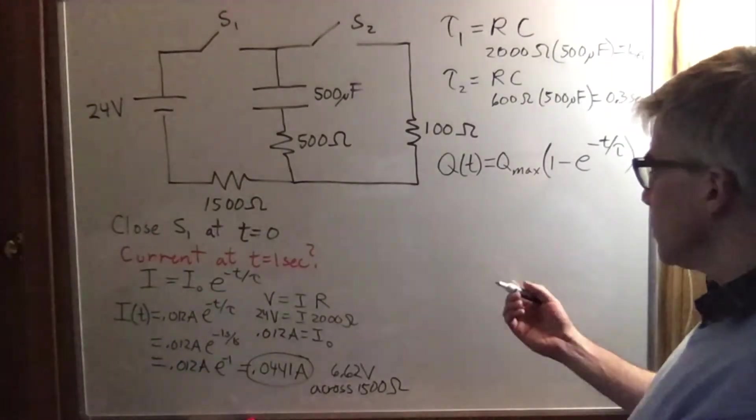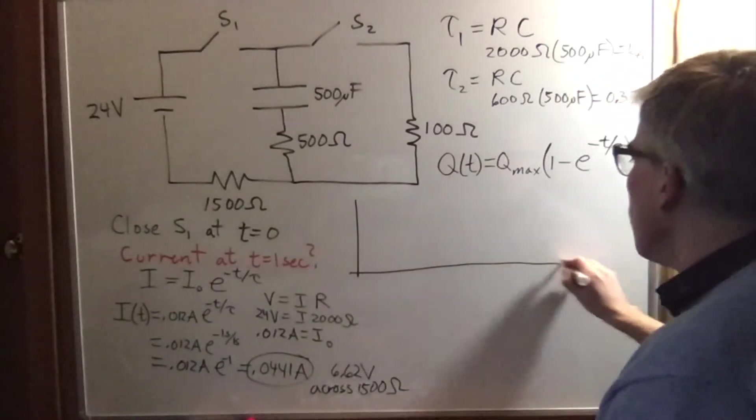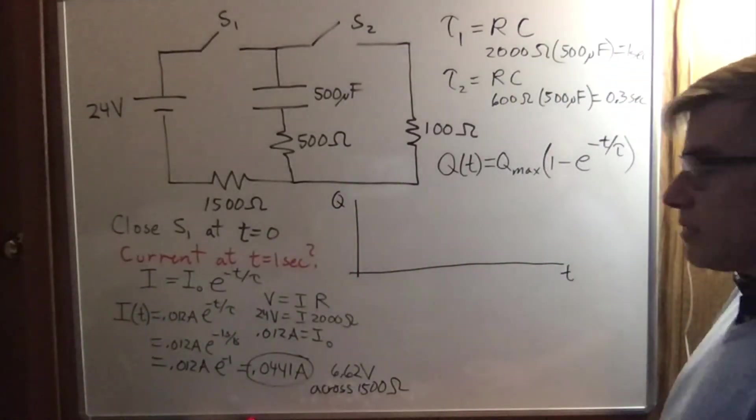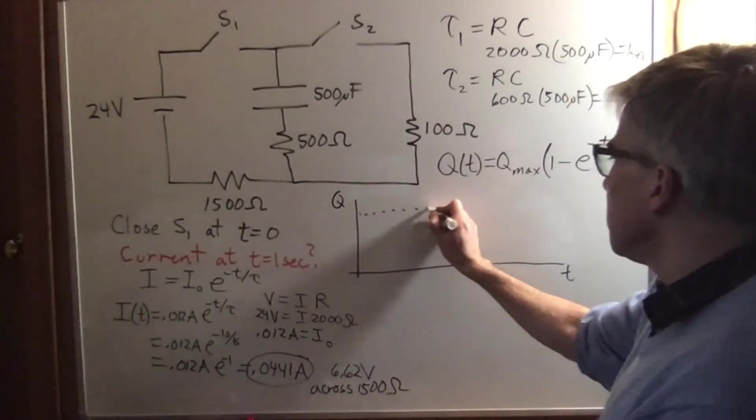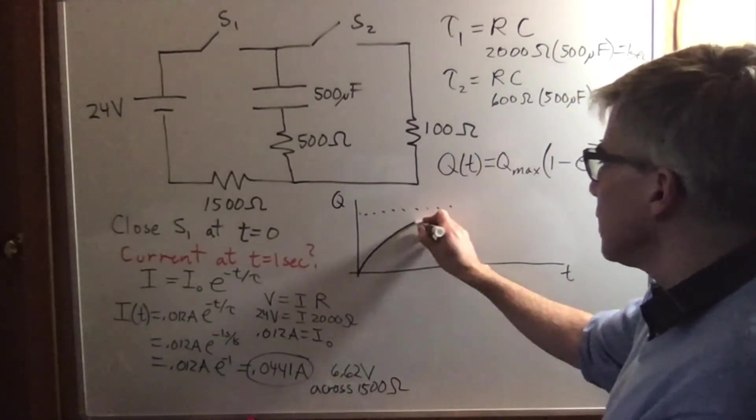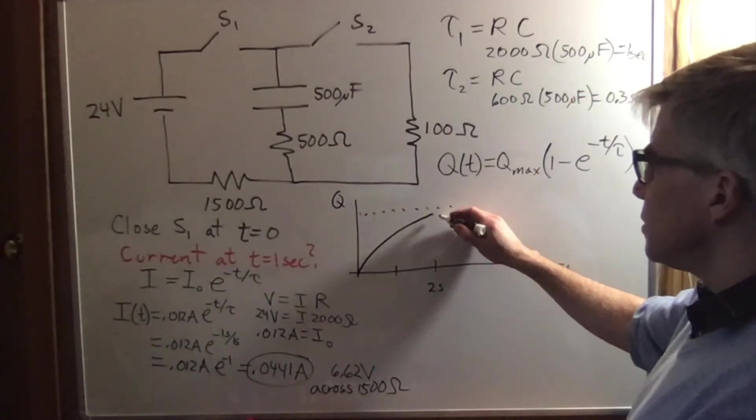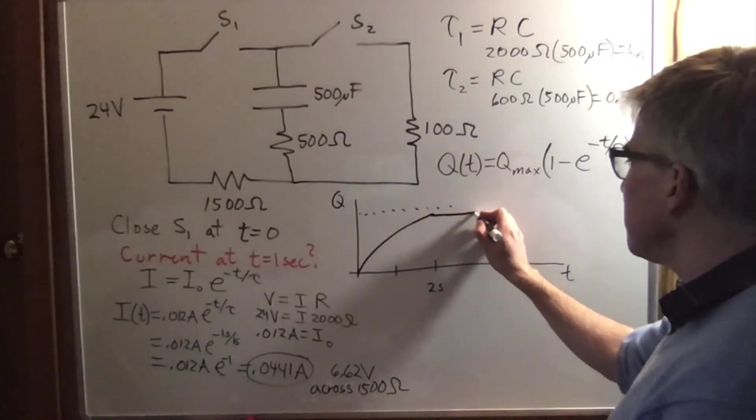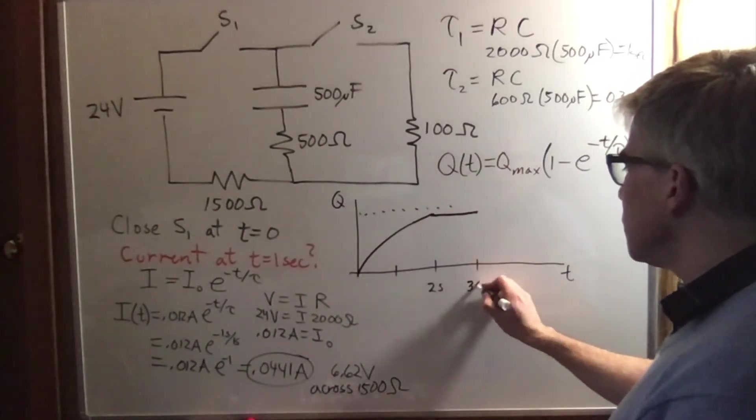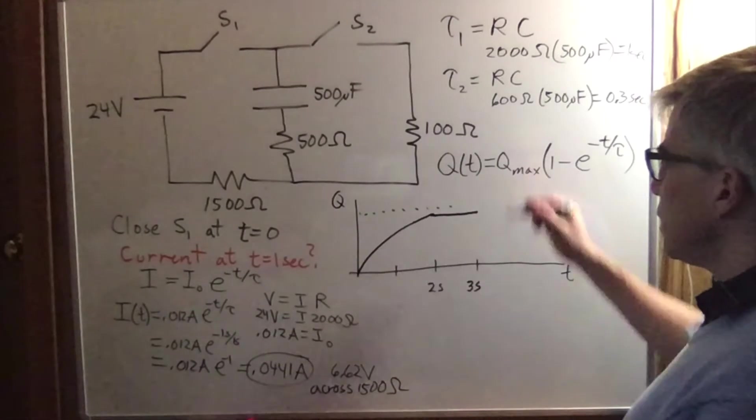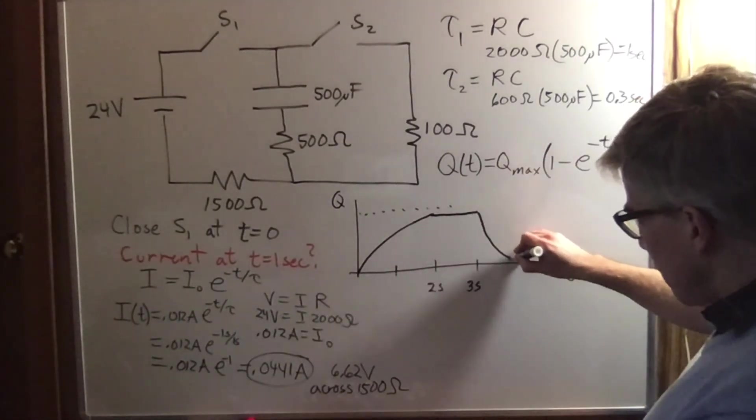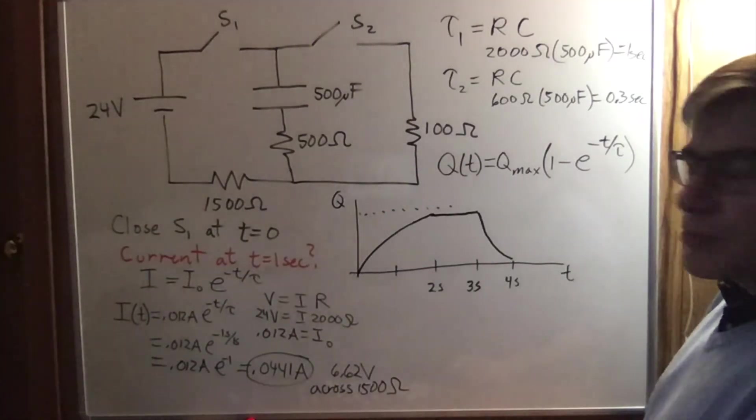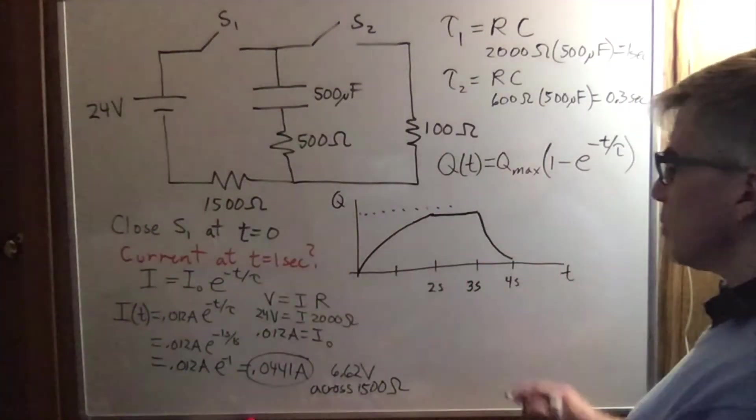We could also ask, based on the original scenario, what does the charge look like as a function of time if we graph it? Now the ramping up part looks like this. It ramps up for two seconds and then we open to the switch again. So then the charge stops ramping up. It stays constant until three seconds. And then at three seconds we started rapidly discharging it. And then at four seconds we asked how much charge there was. So that's roughly what the graph would look like.